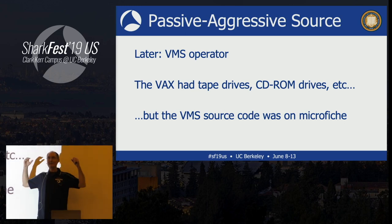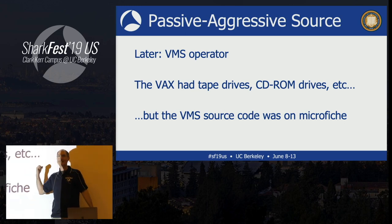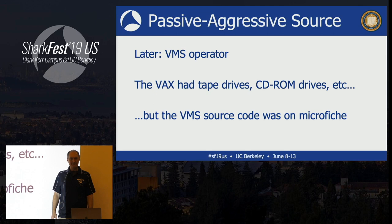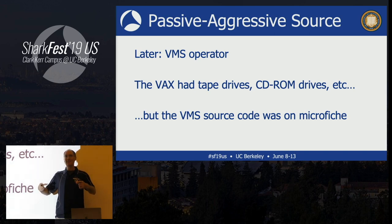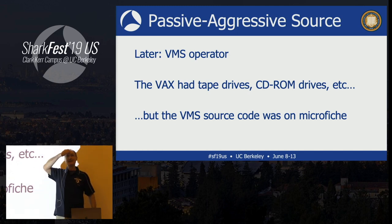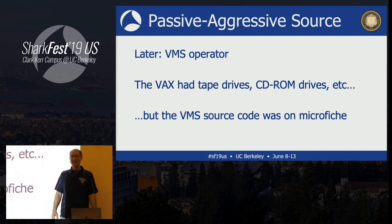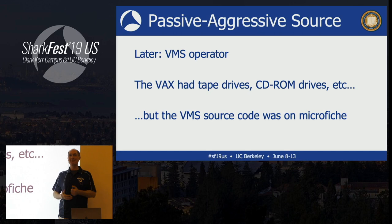These were huge computers that had a CD-ROM drive, network connections, hard drives, tape drives, and so on. One day I was sitting at the operator's desk, needed to get something out of the drawer, and found a box. The box had microfiche in it. The microfiche had the source code to VMS. Apparently Digital would give you the source code for their operating system, but they did it in a very passive-aggressive way — instead of giving it on CD-ROM or for download, they gave it to you on microfiche, which is not computer readable. It was kind of a big middle finger: here, if you have a steady hand and a magnifying glass, you can see the source code.